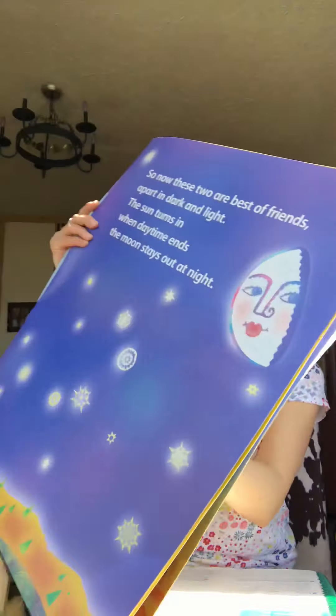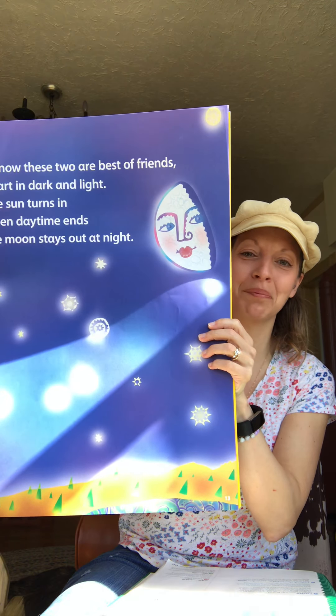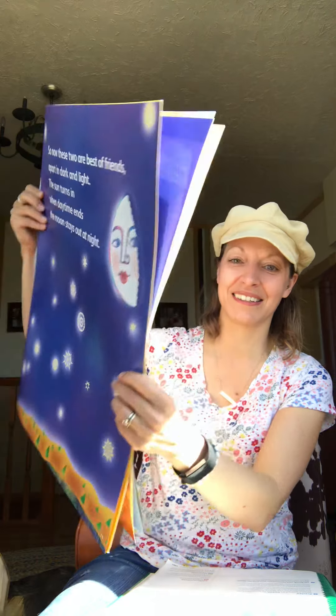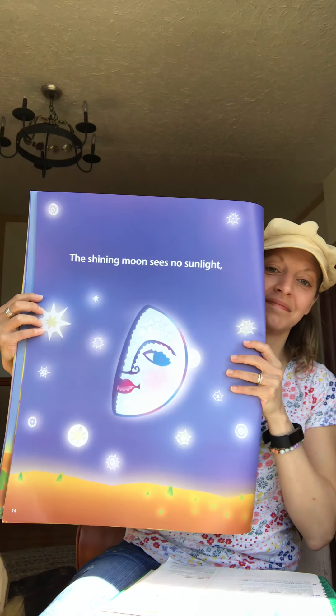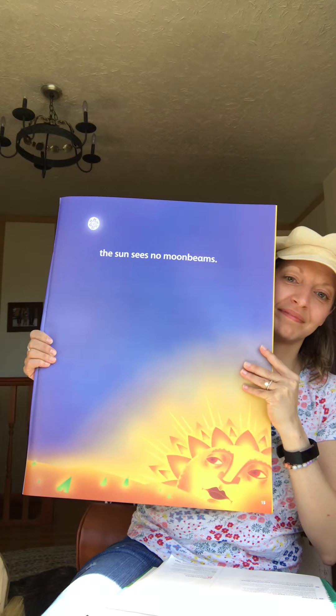So now these two are best of friends apart in dark and light. The sun turns in when daytime ends and the moon stays out all night — the sun going down and the moon high up in the sky with the bright shiny stars. The shining moon sees no sunlight; the sun sees no moonbeams.